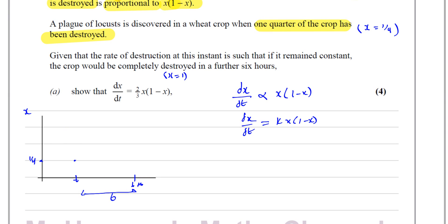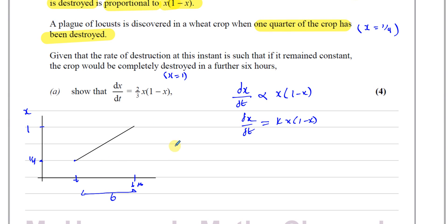After 6 hours, 100% of the crop has been destroyed, so the proportion is 1. They're saying that the rate of destruction, if it remained constant at that instant, the total crop would be destroyed after 6 hours. So we know that the gradient of this line is the change in y — which is 1 minus a quarter.